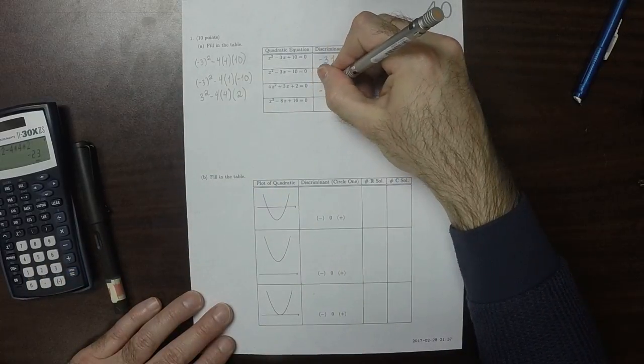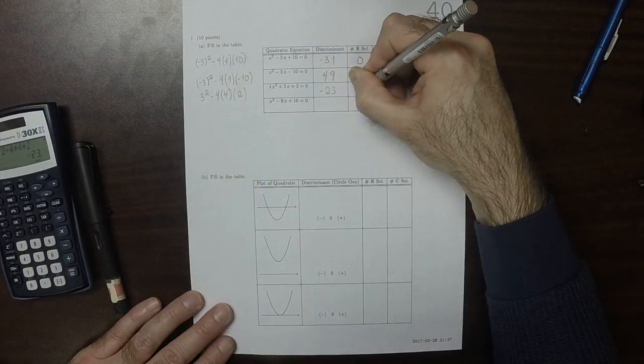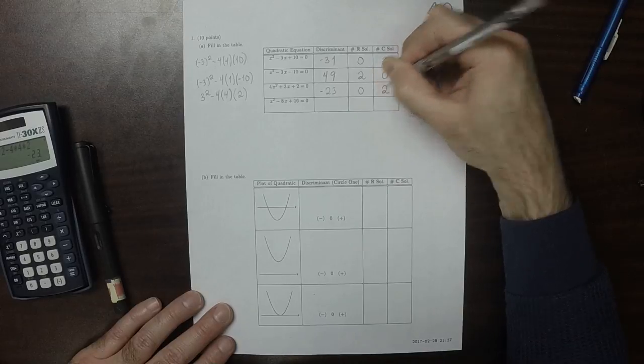It would be negative 23. So that's 0 real solutions and 2 complex solutions.